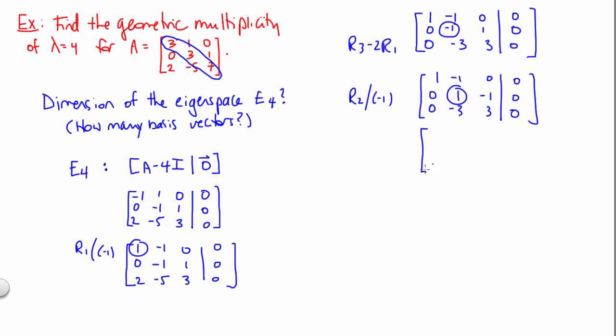And then last thing we can do is just clean up that second column. So let's take row 1 plus our pivot row, and we can also do row 3 plus 3 times our pivot row. So in the top row, that'll give us 1, 0, negative 1, and then a 0. That middle row won't be changing. And in the bottom row, we get a row of 0s. So now we've got our REF.